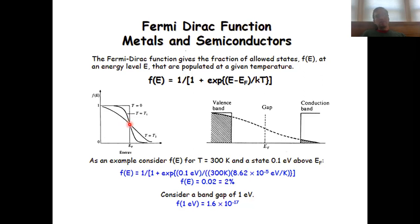At the Fermi level, 50% of the allowed states will be occupied. And then as we go above the Fermi level and look at the excited states, the fraction of the populated excited states will decline as we go farther and farther above the Fermi level.